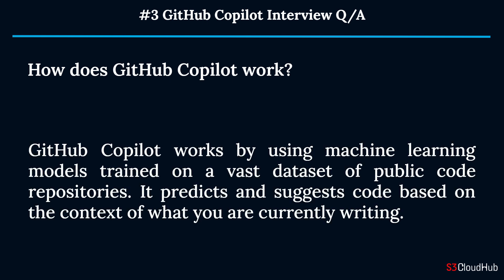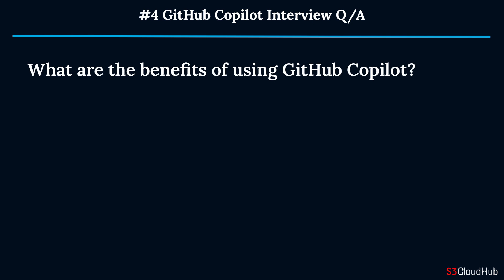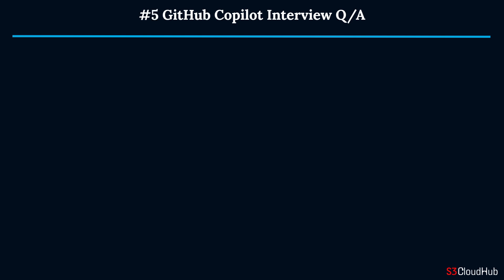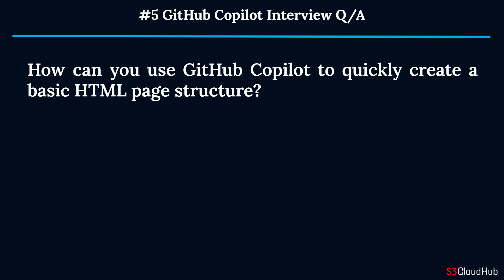It predicts and suggests code based on the context of what you are currently writing. Question four: What are the benefits of using GitHub Copilot? Benefits include increased productivity, reduced coding errors, faster development cycles, and assistance in learning new programming languages or frameworks.